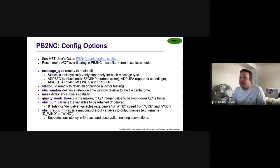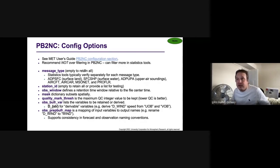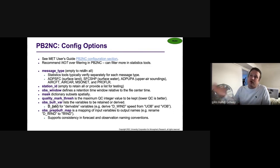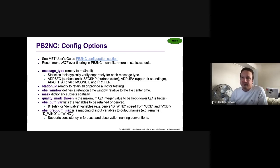What are the options contained in the config file? This list is not exhaustive — for more information, refer to the user's guide configuration section. In general, when you set up your PB2NC configuration file, I would recommend not over filtering. If there are any obs that you even want to consider using in your verification, include them in the PB2NC filtering step. When you run point stat and ensemble stat, you always have the option of filtering observations down by time, type, and location there. If you're dealing with a global dataset and you know your evaluation will be over the continental United States or over India, go ahead and subset spatially just to make the file smaller.